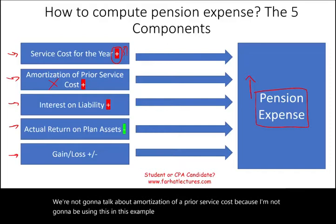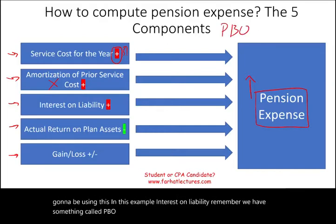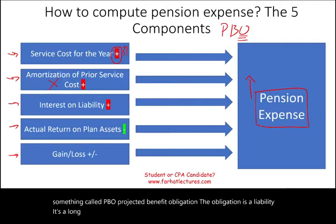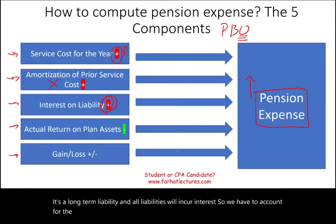Interest on liability: remember we have something called PBO — projected benefit obligation. The obligation is a liability. It's a long-term liability and all liabilities will incur interest, so we have to account for the interest. Any interest cost is added to the pension expense — notice the plus sign.